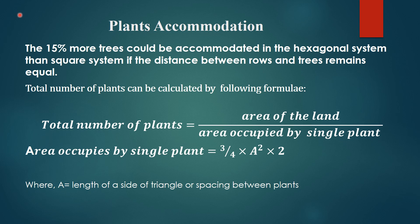The plant accommodation can be calculated in this system. One important thing is that 15% more trees can be accommodated in the hexagonal system than the square system if the distance between rows and trees remains equal. The accommodation of plants can be calculated by this formula: total number of plants is equal to area of the land divided by area occupied by a single plant. The area occupied by a single plant is calculated by the formula: three-fourths multiplied by A squared multiplied by 2, where A stands for the length of a side of the triangle or the spacing between plants.